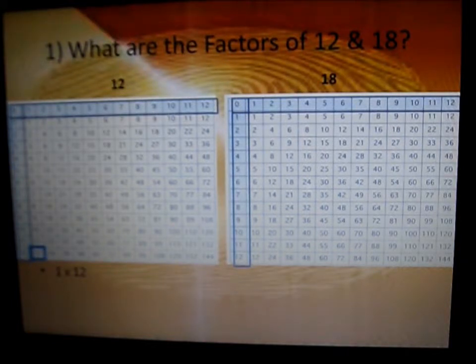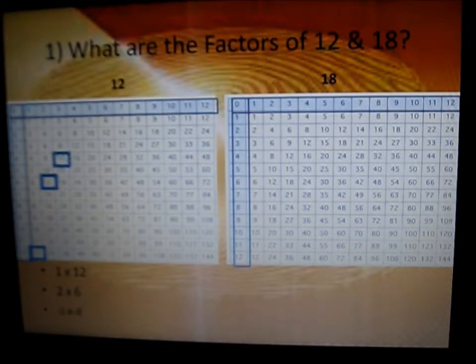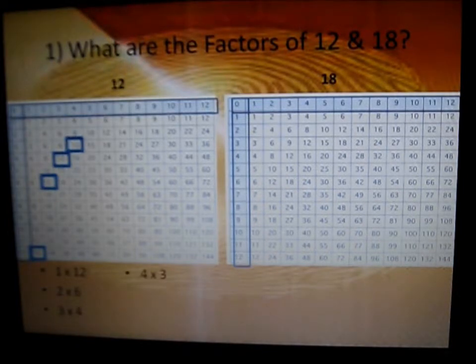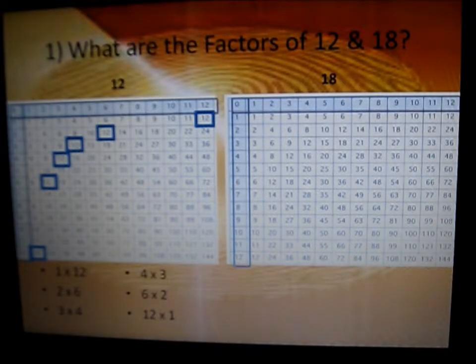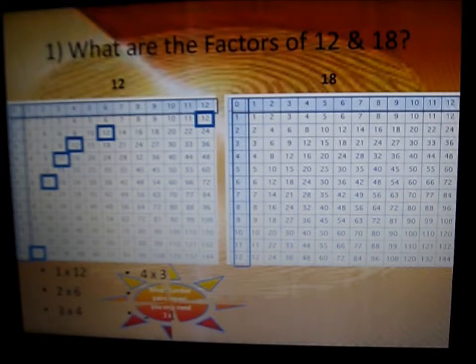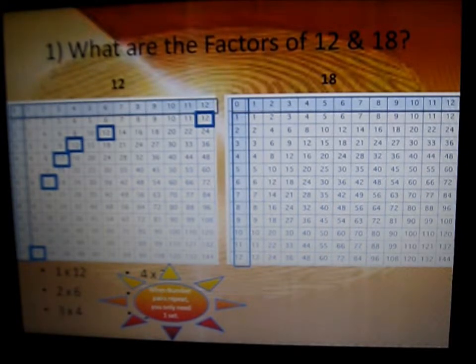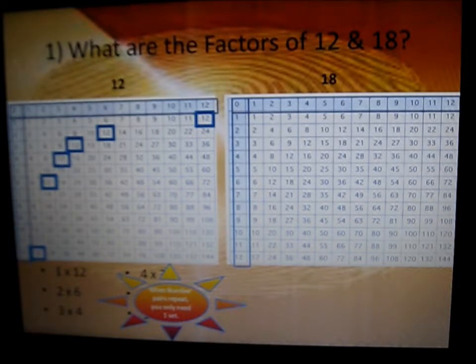What are the factors of 12? 1 times 12 is 12, 2 times 6 is 12, 3 times 4 is 12, 4 times 3 is 12, 6 times 2 is 12, and 12 times 1 is 12. When number pairs repeat, you only need one set: 1, 2, 3, 4, 6, and 12.